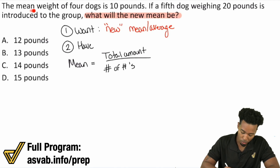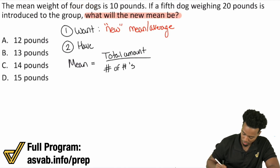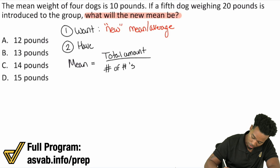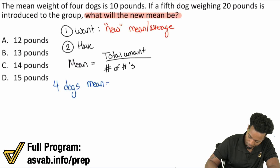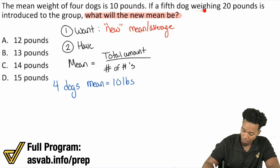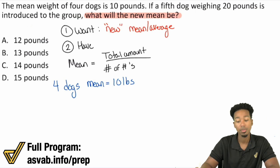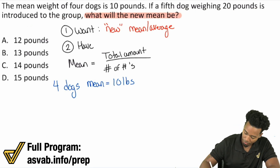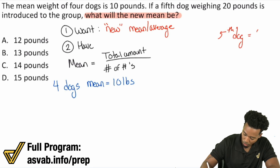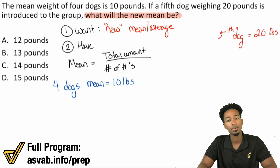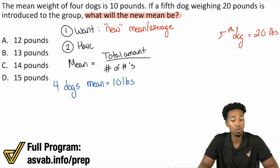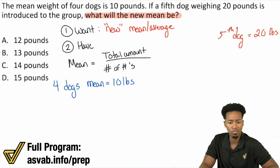The mean weight of four dogs is 10 pounds. So right here: four dogs, and the mean equals 10 pounds. Then it says a fifth dog weighs 20 pounds and is introduced to the group. So we have our fifth dog equals 20 pounds. This is a fairly short question — really just two sentences.